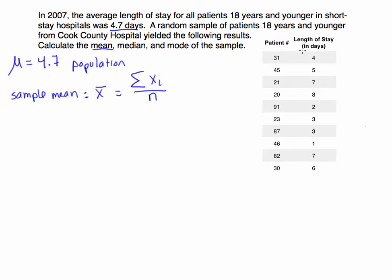Now if we look here to the right, we're looking for the average length of stay. So what I'm going to do is sum all of these values here: 4 plus 5 plus 7 plus 8. I'm going to sum all these values and divide by the total. So if I count through here, 1, 2, 3, 4, 5, 6, 7, 8, 9, 10.